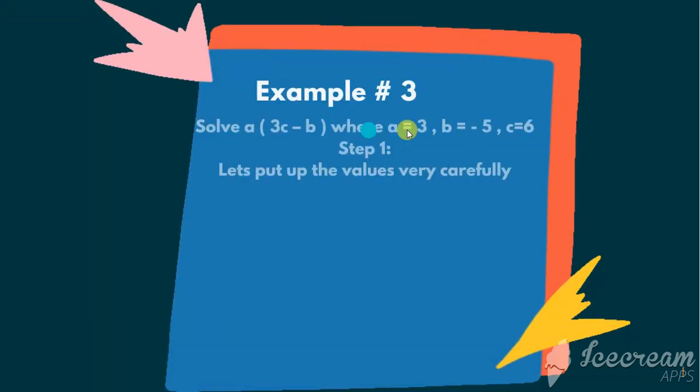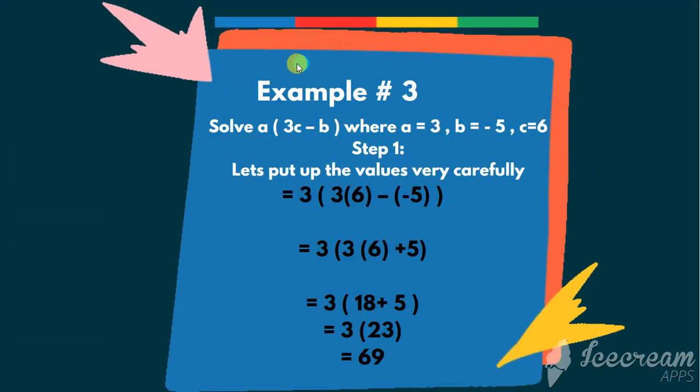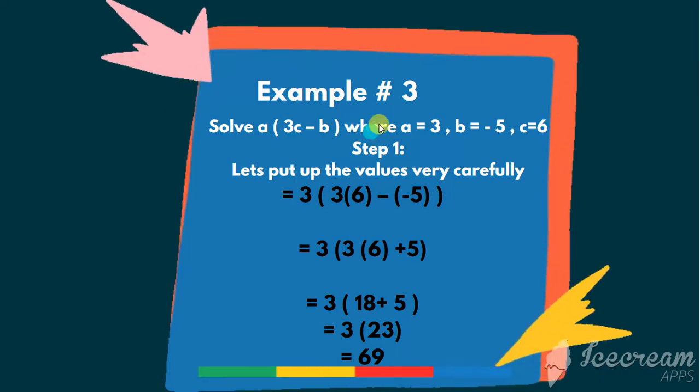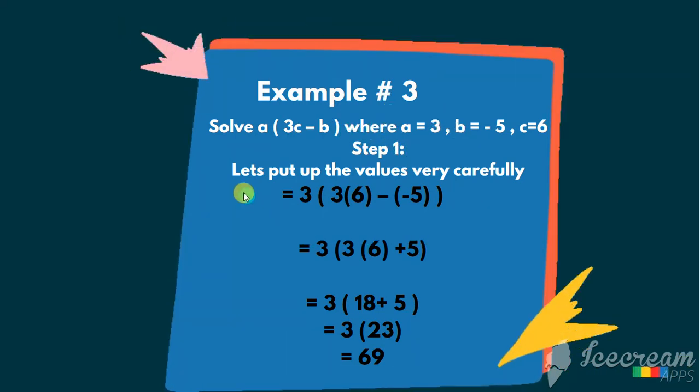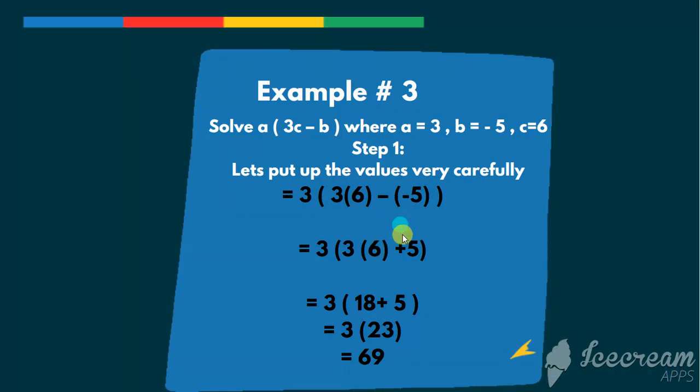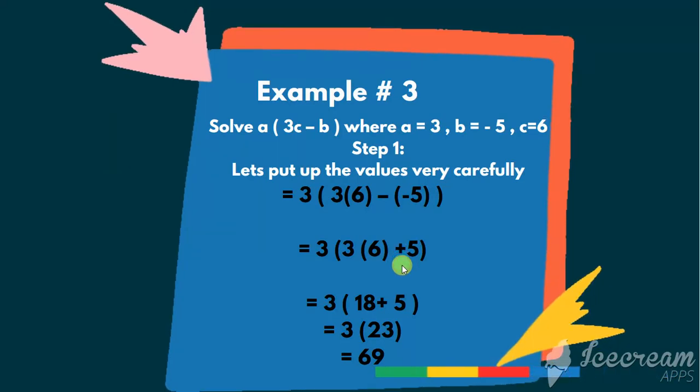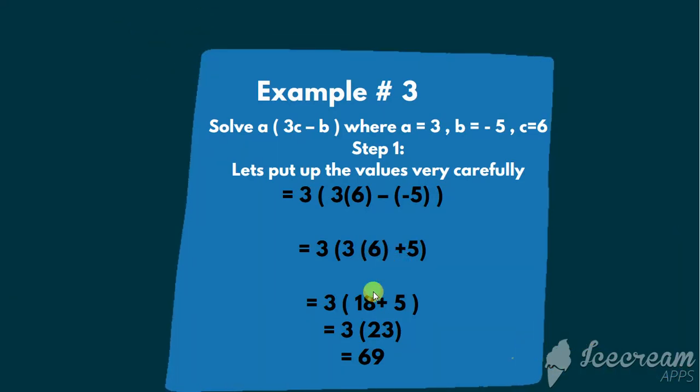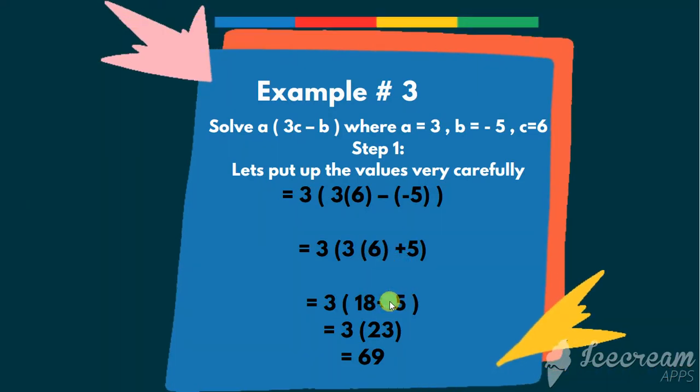Example number 3. Here, we have to solve this equation by putting the given value. Step 1, let's put up the values very carefully. Now, we will multiply the signs. Minus minus is plus and now it will become very easy. 3 times 6 are 18. 18 plus 5 is 23 and 3 multiply by 23.